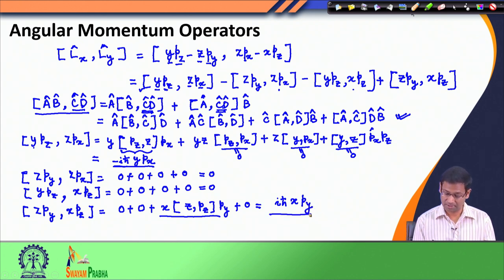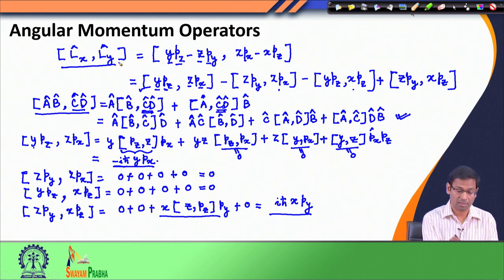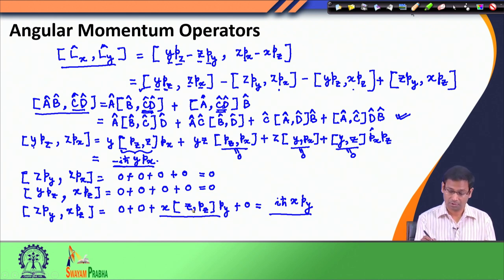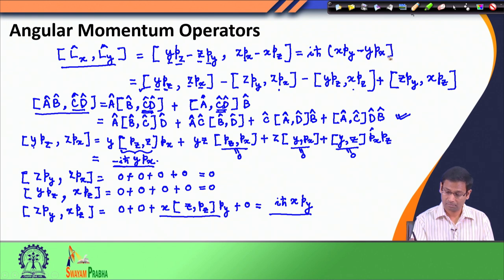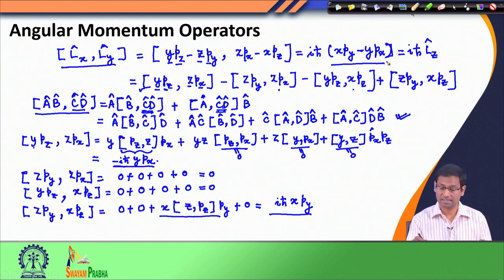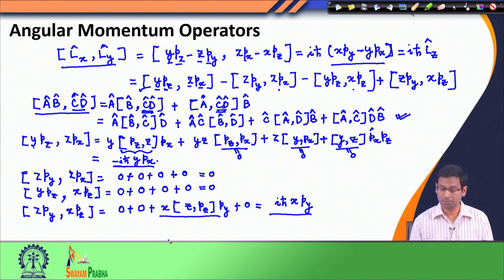Combining the surviving terms from all four commutators, we get [Lx, Ly] = iℏ·x·py − iℏ·y·px = iℏ(x·py − y·px). Recognizing that x·py − y·px is exactly the definition of Lz, we conclude that the commutator [Lx, Ly] = iℏ·Lz. So Lx and Ly do not commute.